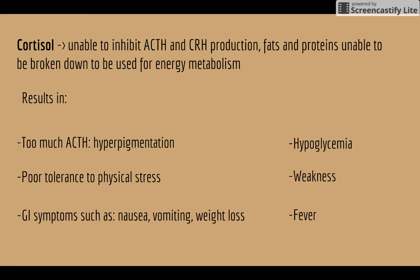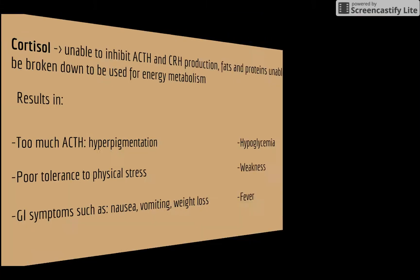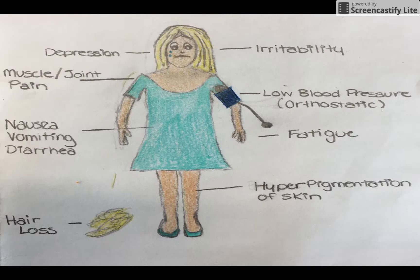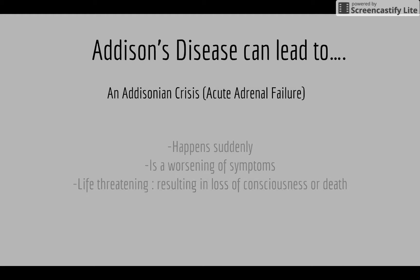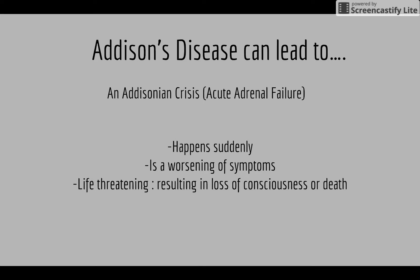The lack of cortisol and aldosterone can cause these symptoms. Decreased androgen production can cause a loss of hair in women, because in men the testes also produce these androgens. In serious unmanaged cases, Addison's disease can lead to an Addisonian crisis, which is acute adrenal failure. It happens suddenly, is a worsening of symptoms and can be life-threatening, resulting in a loss of consciousness or death.